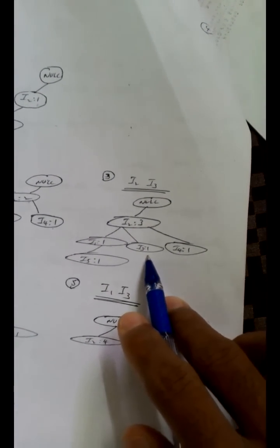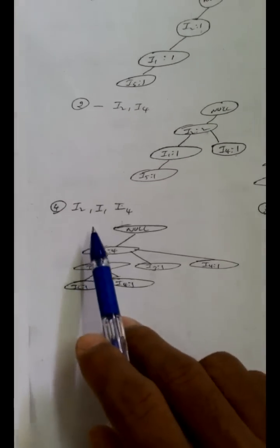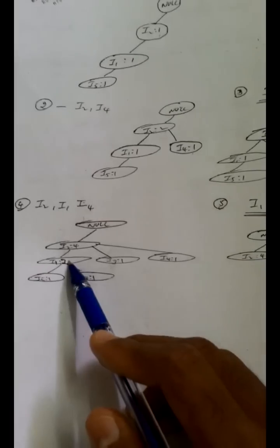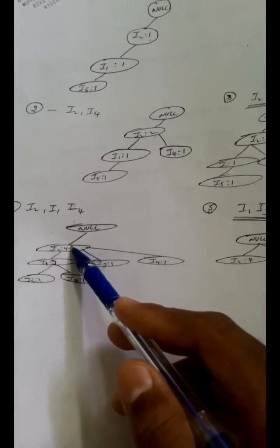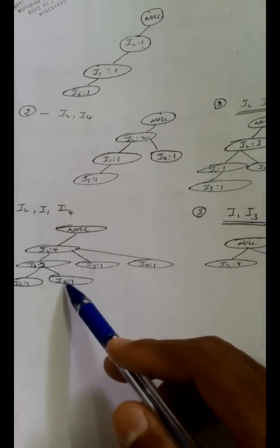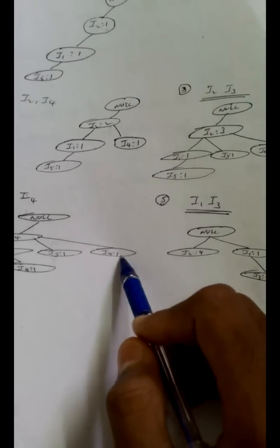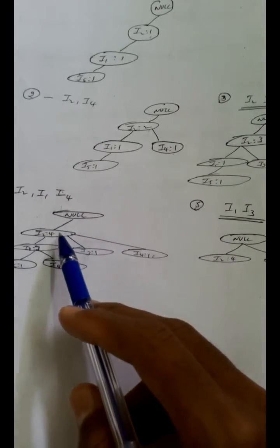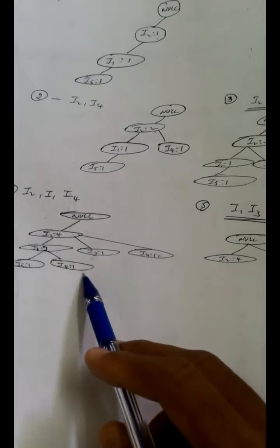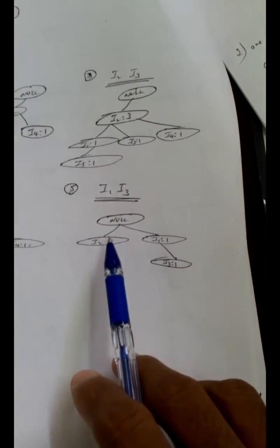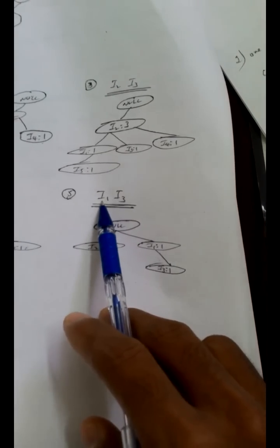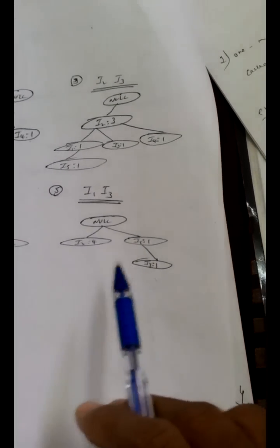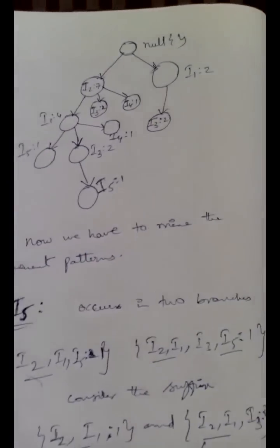For the transaction i2 and i3, we increment the count of i2 to 3, then add child node i3. For transaction i2, i1, i4, we increment i2 to 4 and i1 to 2. Since the sequence is i2 → i1 → i4, we create a new child i4 under i1. We are not incrementing the existing i4 child under i2, because that i4 follows a different path. Similarly, for i1, i3, we create a new node from root. The full tree is constructed this way with all counts labeled.